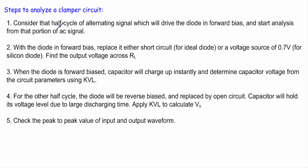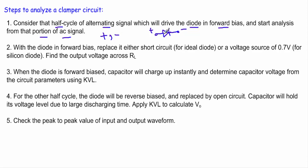First, we have to consider that half cycle of the alternating signal which will drive the diode in forward bias, and I will start my analysis from that portion of the AC signal. An alternating signal has two half cycles — positive and negative. A diode is in forward bias when the positive terminal of the signal is connected with the P-side of the diode and the N terminal of the source is connected to the N side. The half cycle that sets this condition is where I will start my analysis.